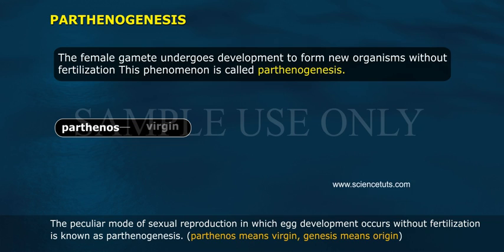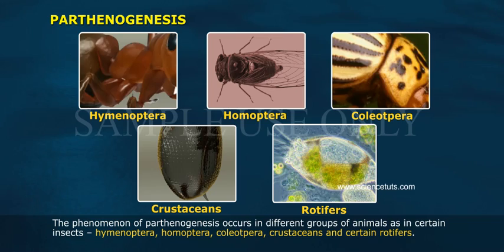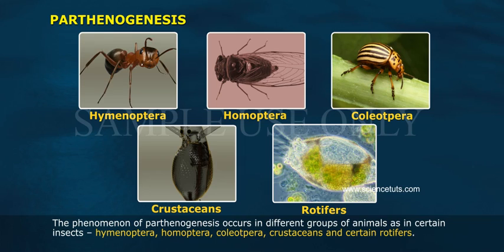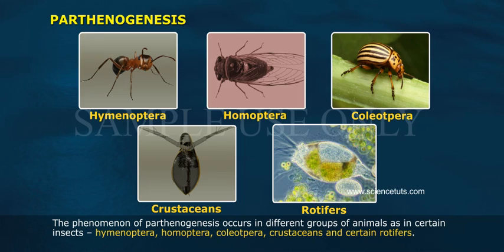The phenomenon of parthenogenesis occurs in different groups of animals, such as certain insects — Hymenoptera, Homoptera, Plecoptera — as well as crustaceans and certain rotifers.